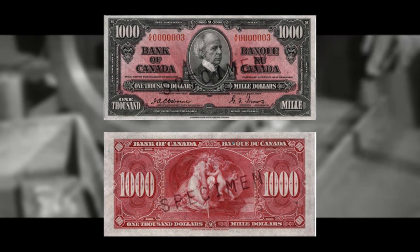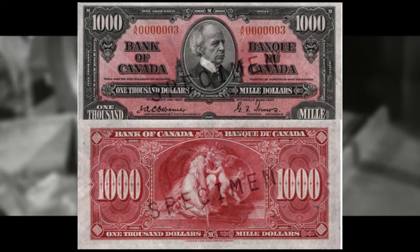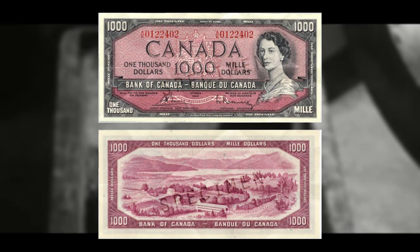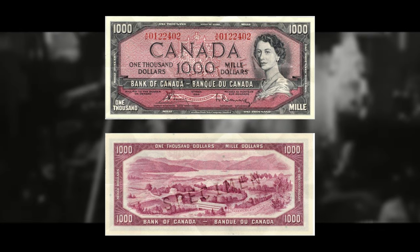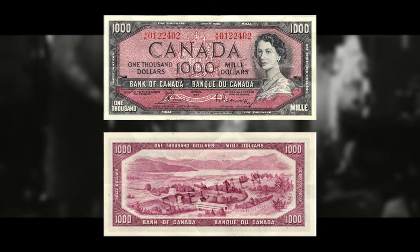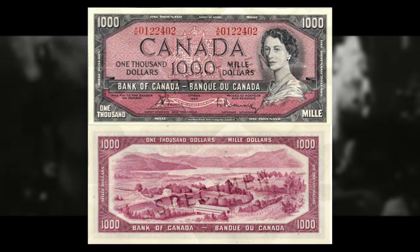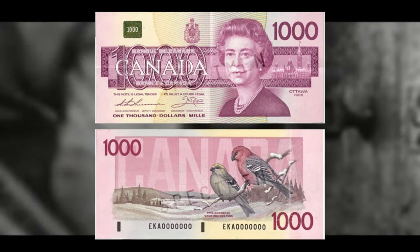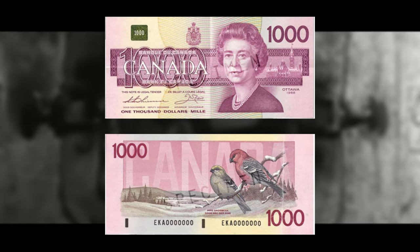The banknotes already in circulation were gradually withdrawn and destroyed. Today, a Canadian $1,000 bill is a rare sight even for some collectors, and some of the banknotes withdrawn from circulation are now selling at auctions for tens of thousands of dollars. The value of these notes is determined by factors including their condition, rarity, and historical significance. Although the $1,000 bill is no longer in circulation, its legacy lives on as an important part of the history of Canadian currency and finance, and its discontinuation was a significant step in the fight against money laundering.